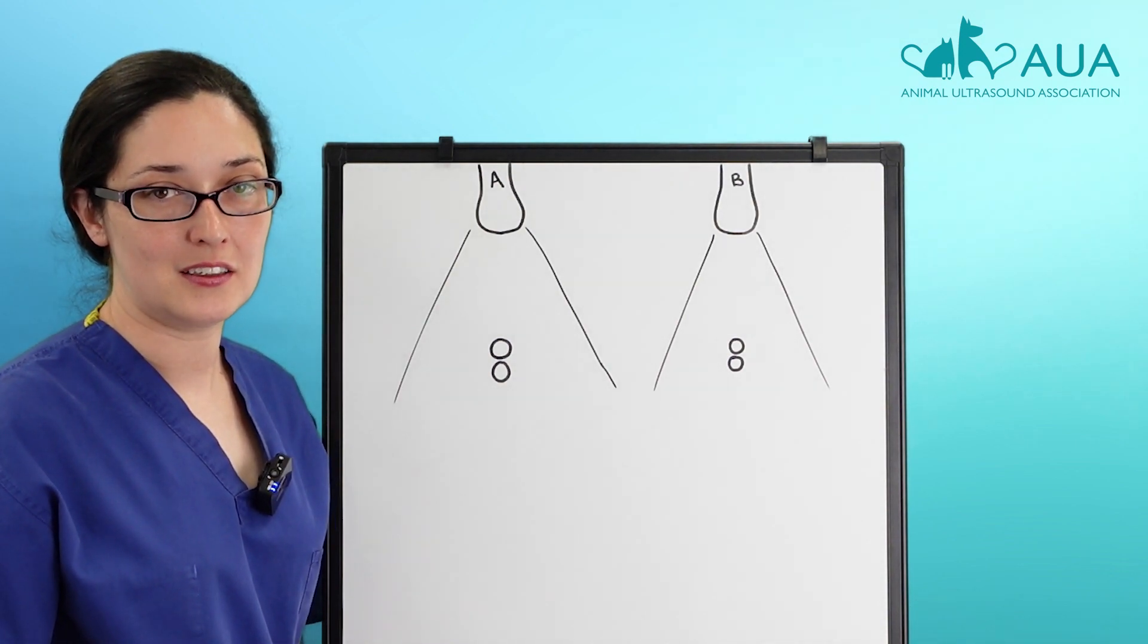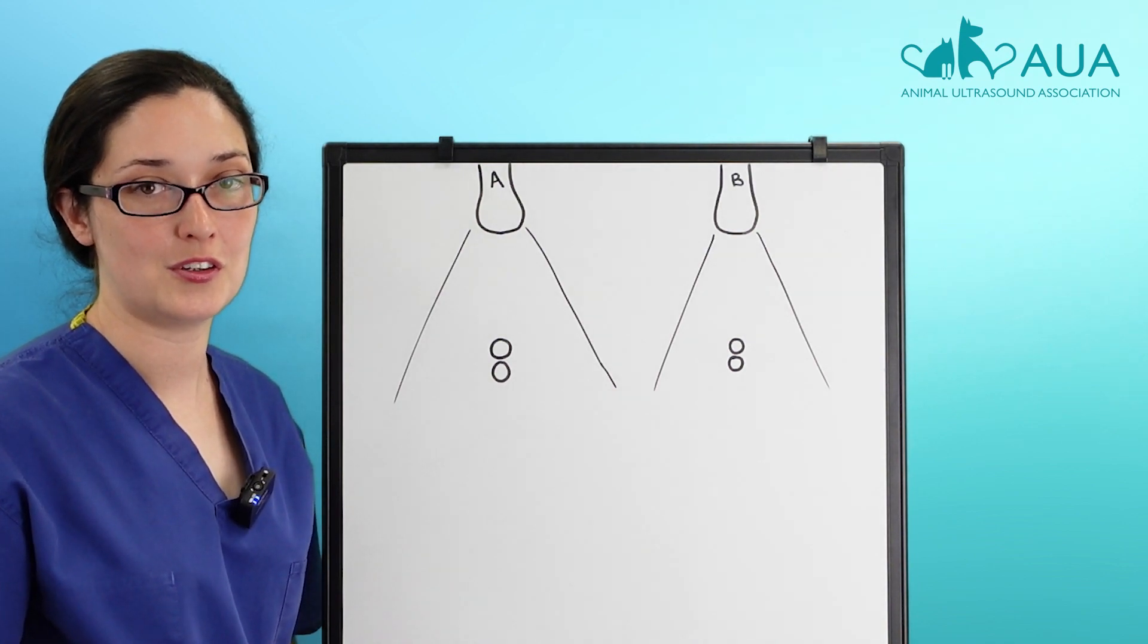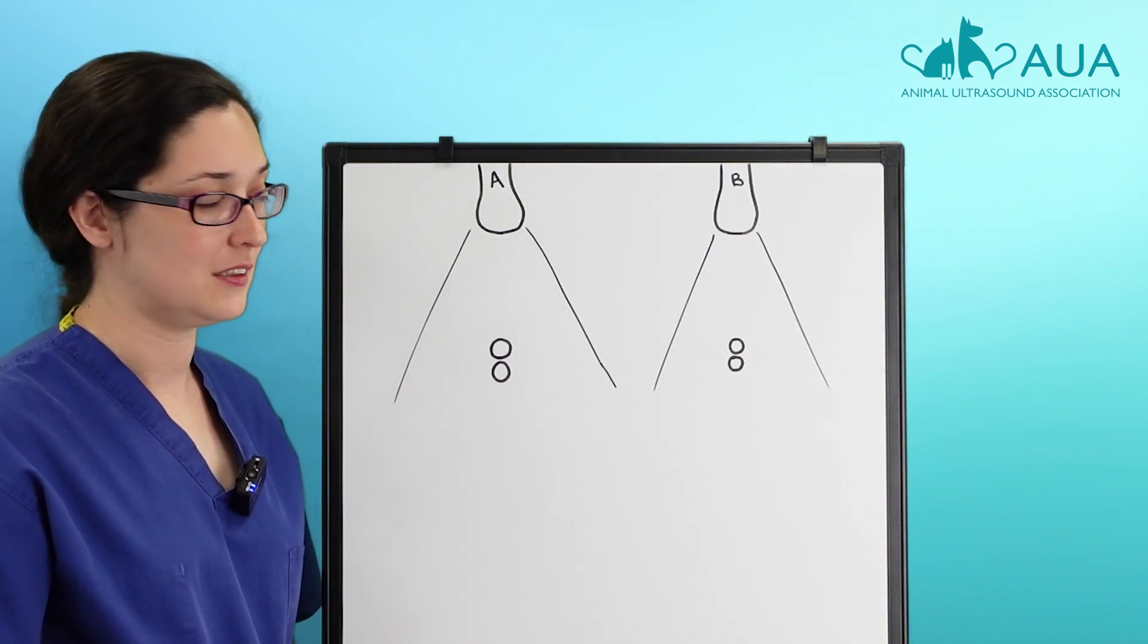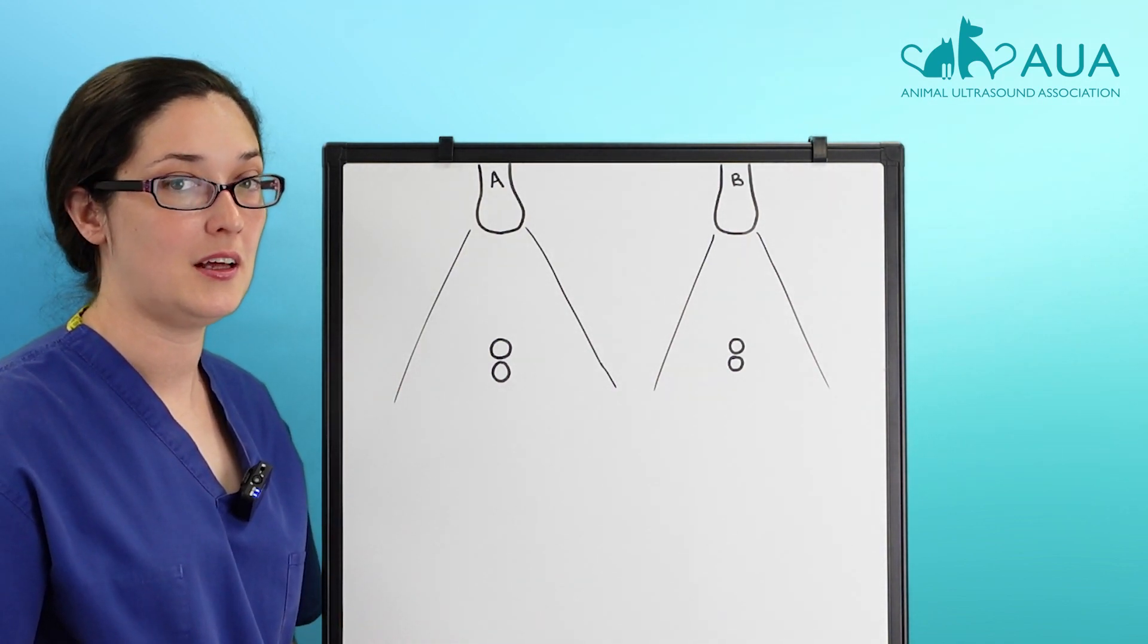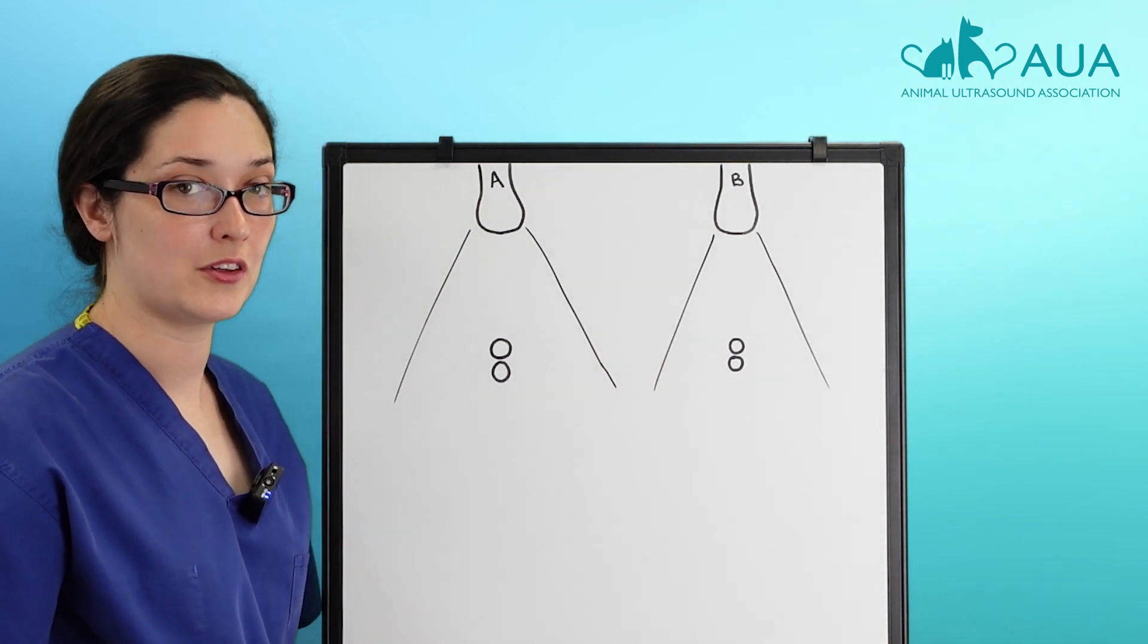Axial resolution is the ability of your scanner to distinguish two points in the vertical direction as being two distinct points. Scanner A has good axial resolution, so where there are two distinct points in the body, it displays on your ultrasound monitor as two points.